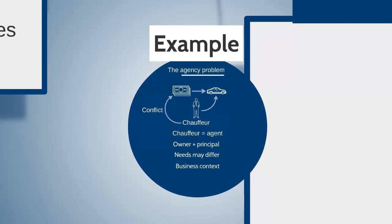This seems quite a simple theory — you've got an agent, you've got the principal, and their needs sometimes differ. But how do we link this back to corporate governance? In a business context, the owners are the principals. The owners employ the directors, and the directors are the agents. The directors are employed to run the business for the owners, much like you employ the chauffeur to run the car. A priority of the directors should be to run the business in the shareholders' interest.